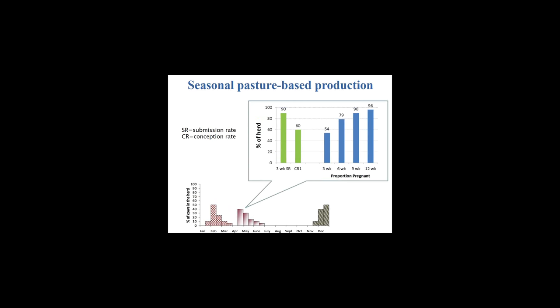In terms of targets, we would expect that 90% of cows have been submitted for insemination within three weeks of the beginning of the breeding season, and that the conception rate to the first insemination is in the order of 60%, such that at the end of a 12-week breeding season the vast majority of cows in the herd are pregnant. The targets for optimum fertility would then be 60% pregnant to first service, more than 70% 6-week in-calf rate, and more than 90% 12-week in-calf rate.